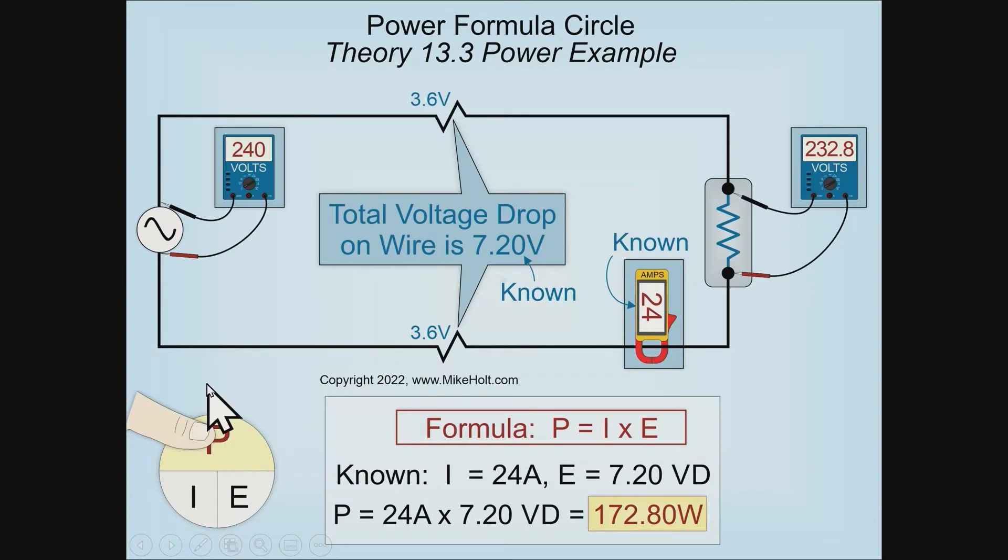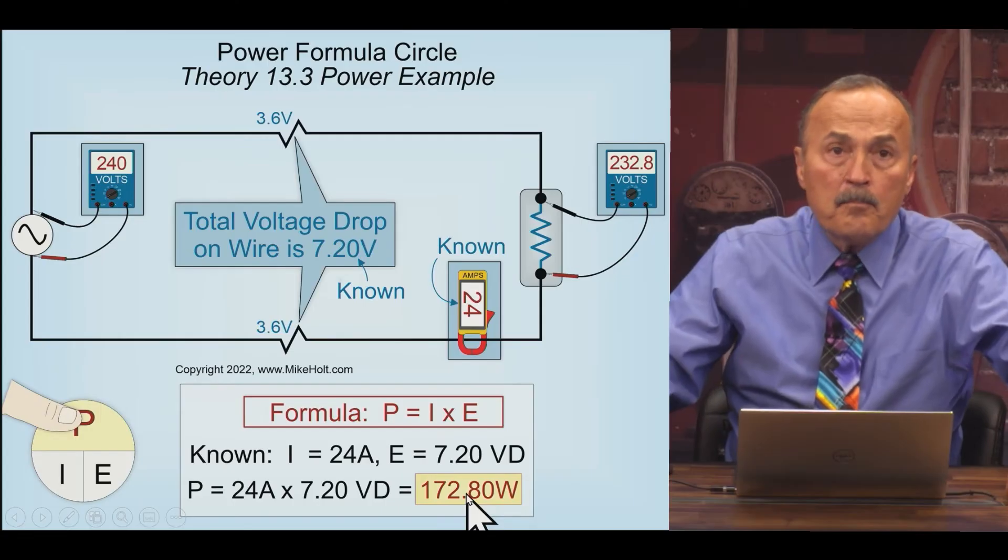I want to know what the power loss is of this wire if I know that it has a 7.2-volt drop and it's drawing 24 amperes. Again, these are all given. Well, the wire itself, the two wires, are losing 172 watts, almost 173 watts of power per hour.